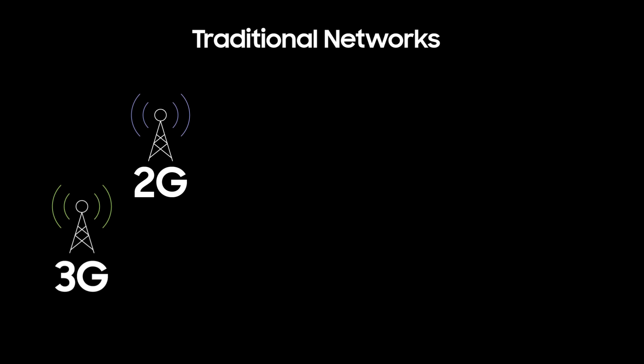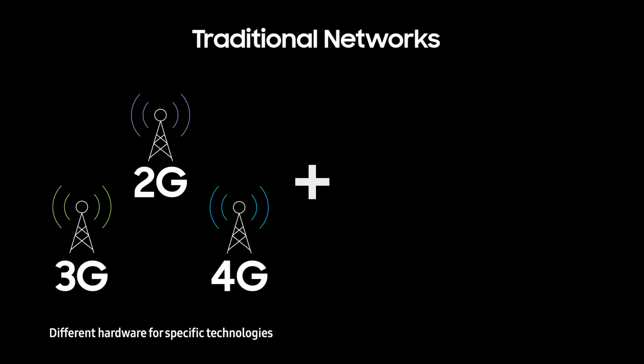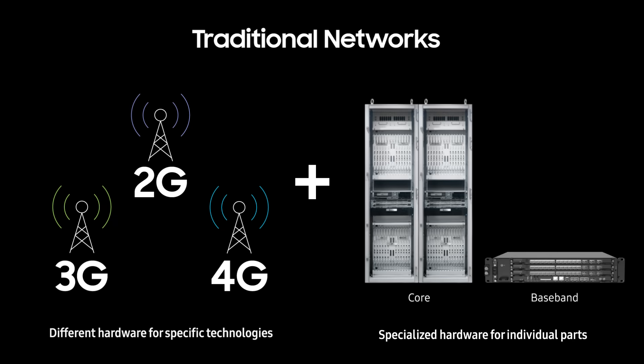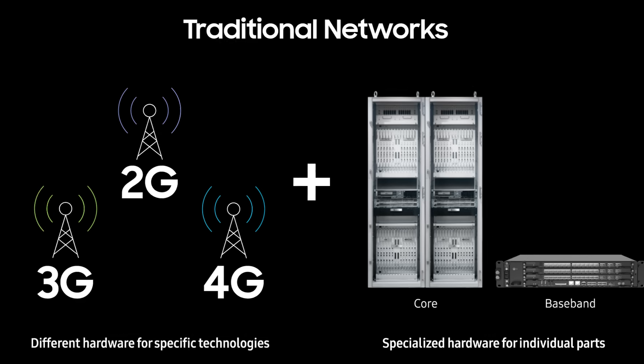The same concept applies to telecommunication networks. In traditional 2G, 3G, and 4G networks, you needed different hardware for specific technologies and specialized hardware for individual parts of the network, such as the radio access and core. And these elements were proprietary, so both hardware and software needed to come from the same vendor to function correctly.